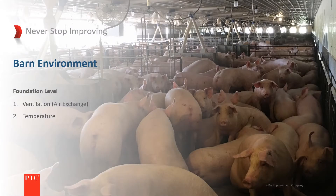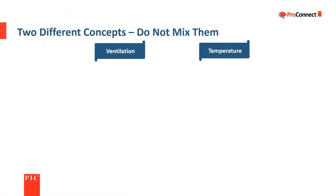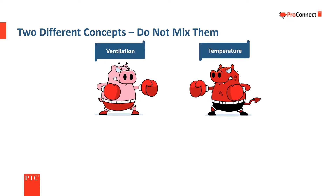During this presentation, we will focus on two main areas of the barn environment: ventilation and temperature. The quality of the barn environment impacts the pigs' well-being as well as their performance. Ventilation and temperature are two distinct but related topics.